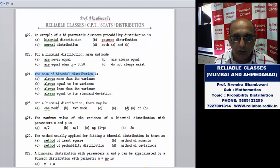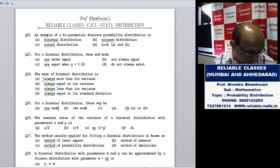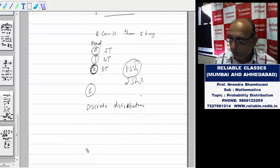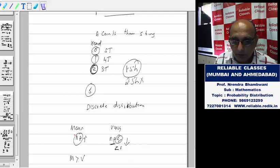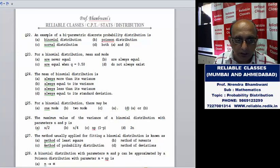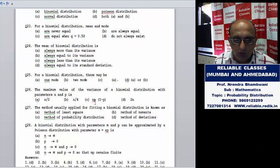For a binomial distribution, mean is np, always more than variance. Mean is np and variance is npq. And q is less than one. When you multiply by less than one, np is always greater. So mean is greater than variance - mean is always more than variance. For a binomial distribution, there may be one mode or two modes.